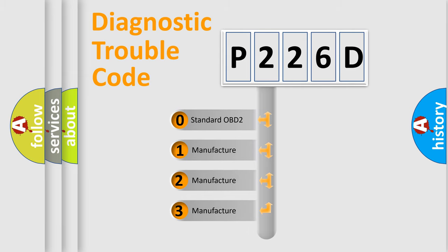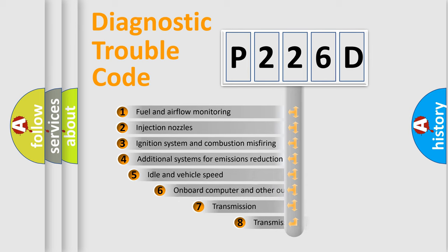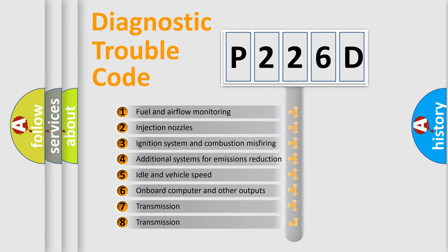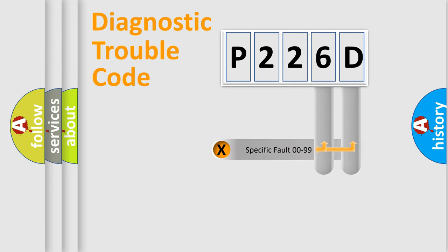If the second character is expressed as zero, it is a standardized error. In the case of numbers one, two, three, it is a manufacturer-specific expression of the car error. The third character specifies a subset of errors. The distribution shown is valid only for the standardized DTC code. Only the last two characters define the specific fault of the group.